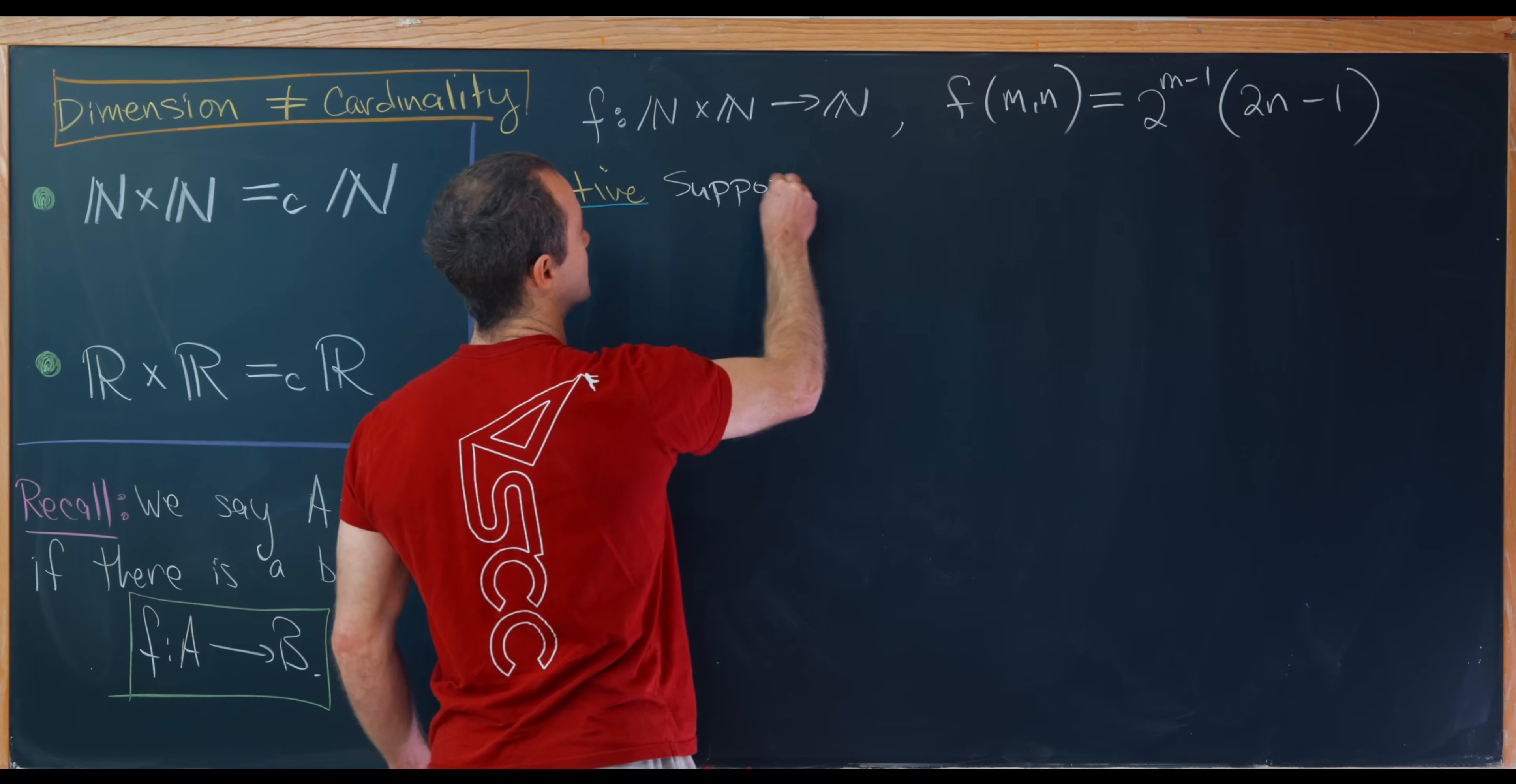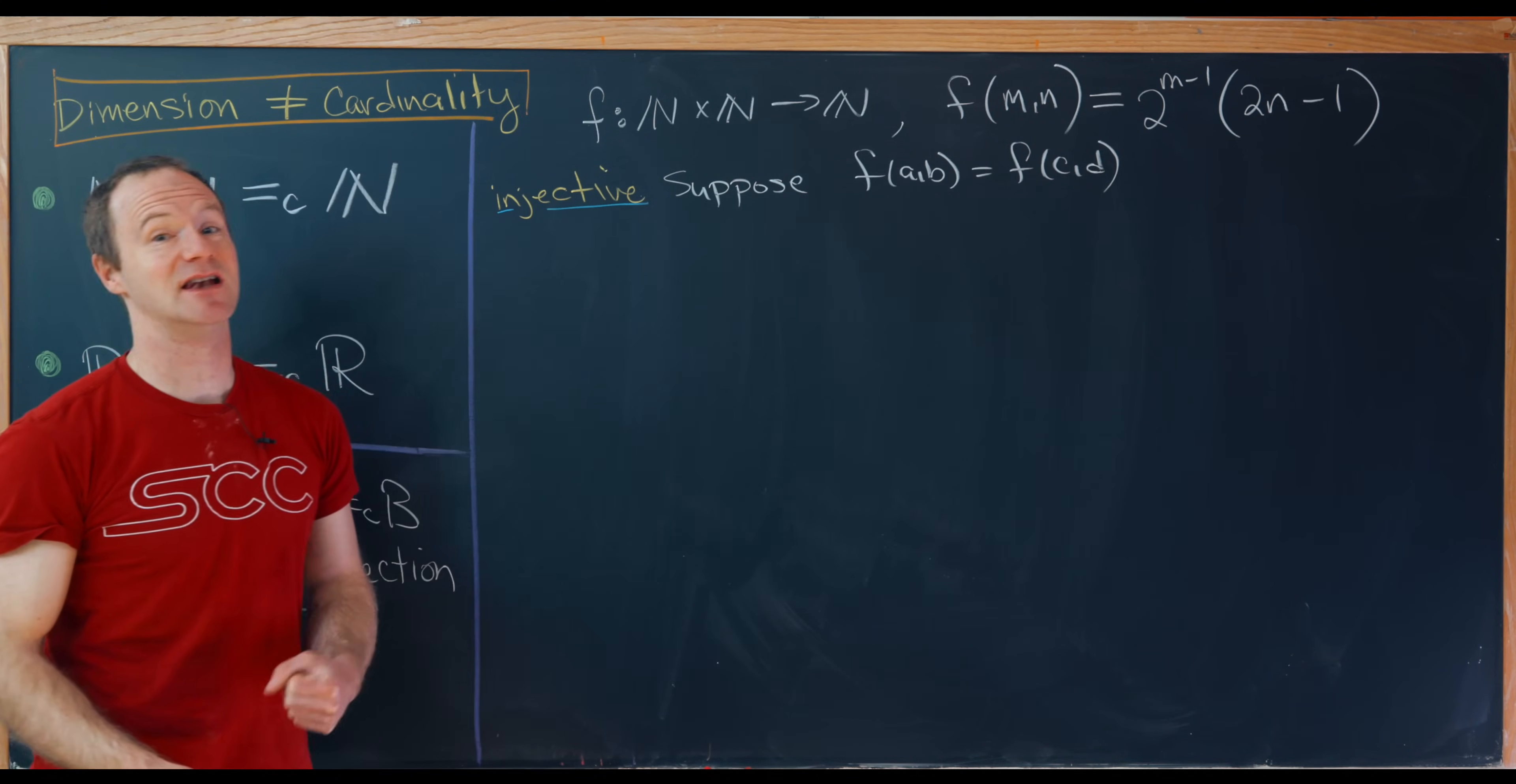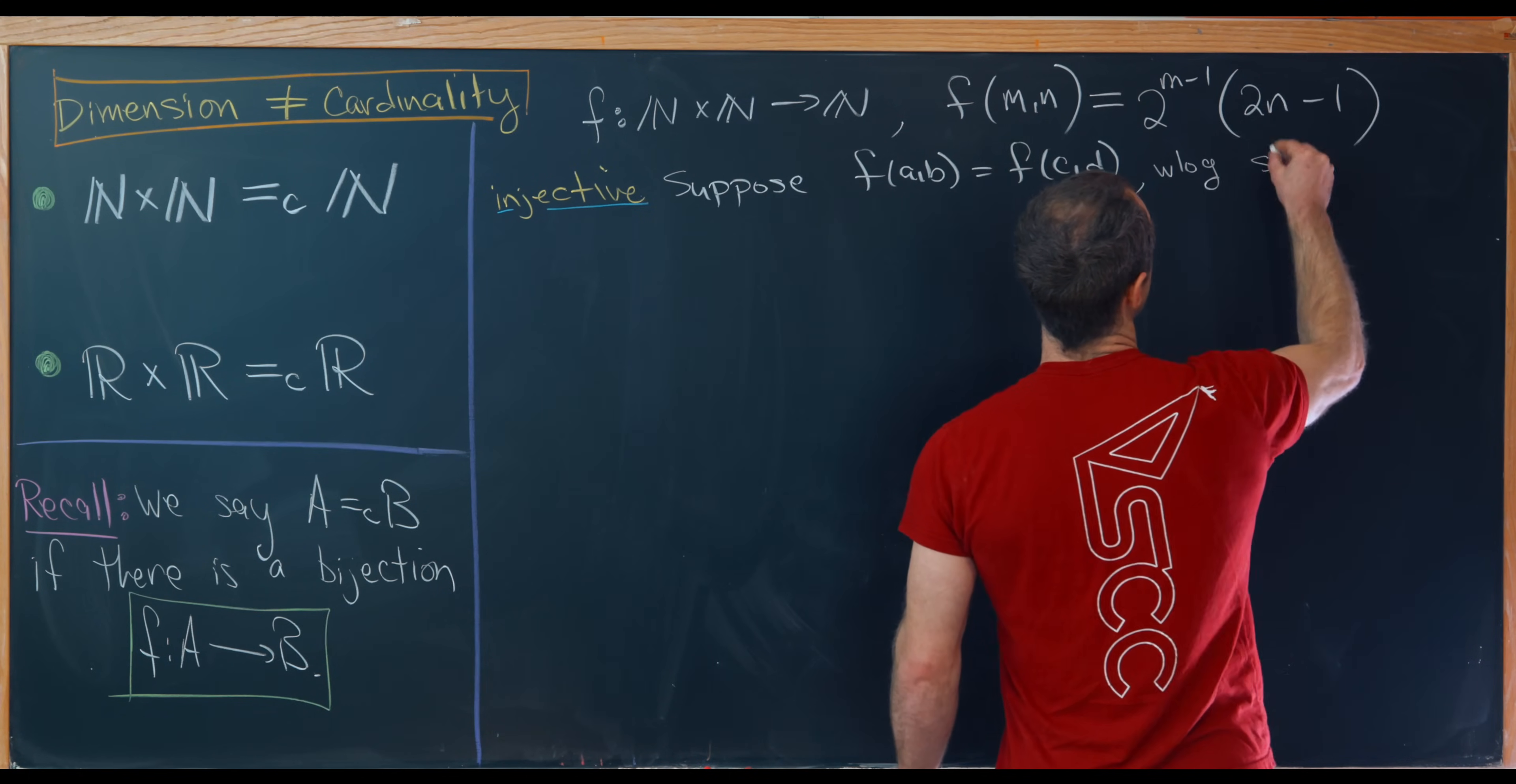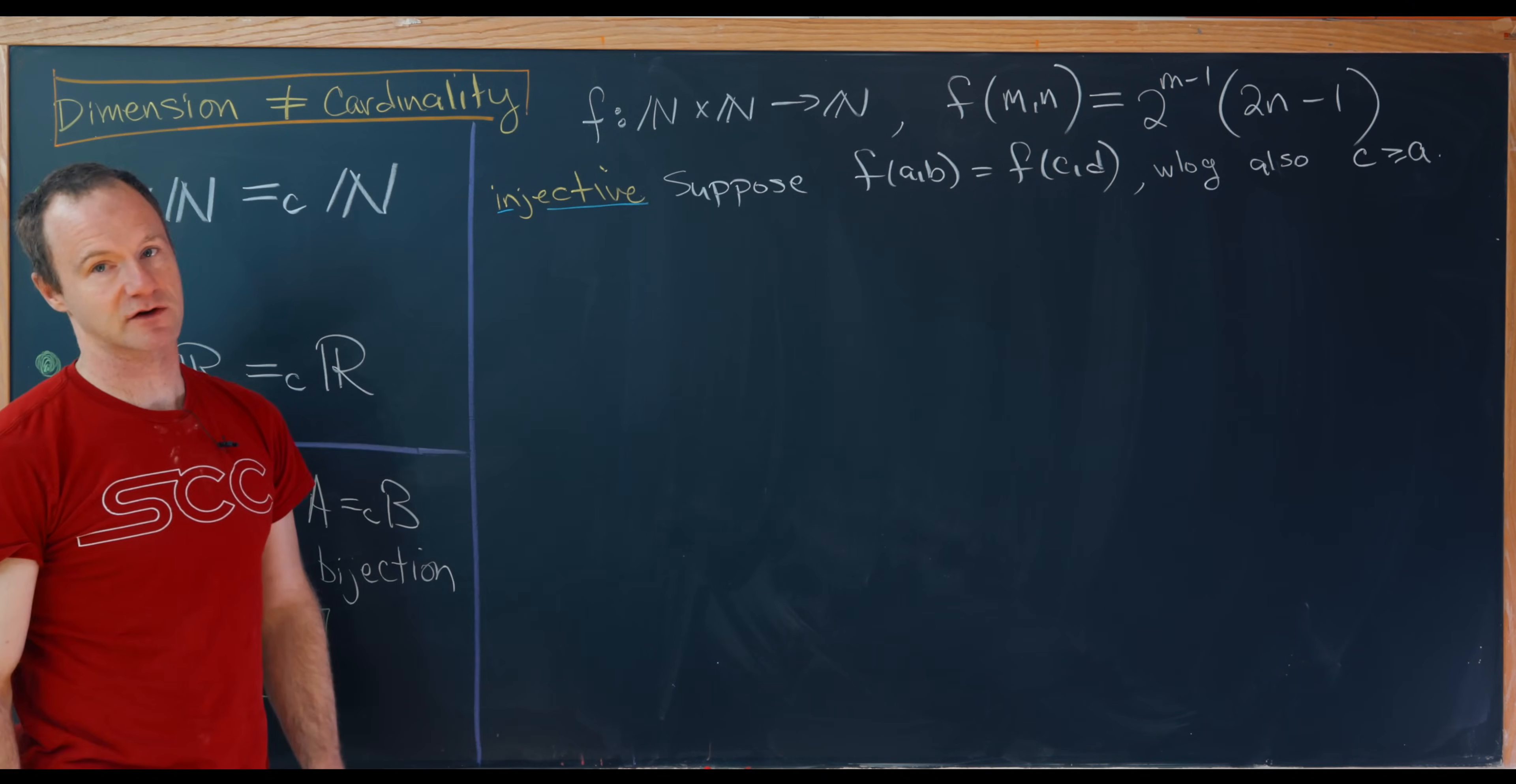So let's first show that this thing is injective. We will suppose that f(a,b) is the same thing as f(c,d). So this is always the first step for injectivity. You suppose that a function evaluated at some element of the domain is equal to a function evaluated at another element of the domain. And then you should end up with those elements of the domain are the same. And then maybe we'll go ahead and do this as well. Without loss of generality let's also suppose that c is bigger than or equal to a.